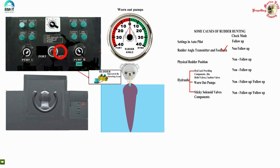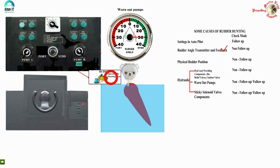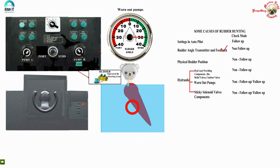Take the rudder to hard starboard using non-follow-up and measure the time from midship to hard starboard - or you can do it from hard starboard to hard port. Compare this reading with SOLAS required timing. In this case, if the expected time is 14 seconds but it took 20 seconds, obviously the problem is the worn-out pump.